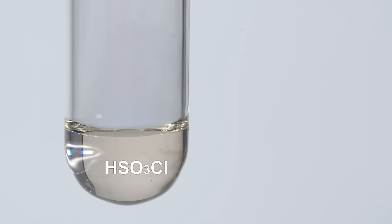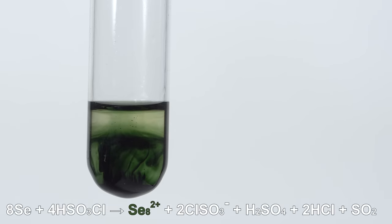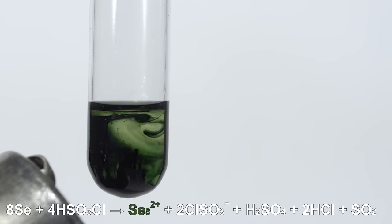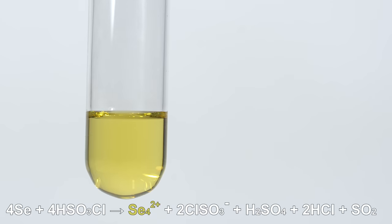Selenium dissolves in chlorosulfonic acid, giving a green solution, which after a few hours of heating turns yellow. The green color is due to the formation of the selenium-8 cation. The yellow color is due to the formation of the selenium-4 cation.